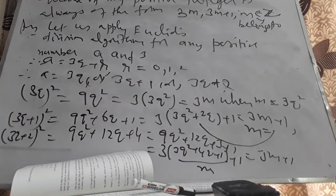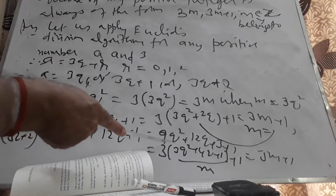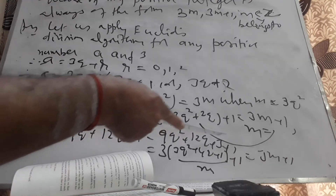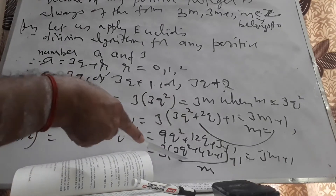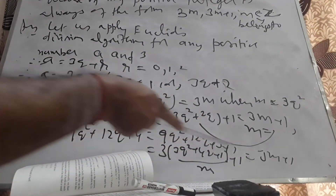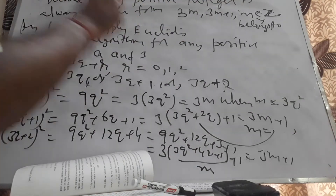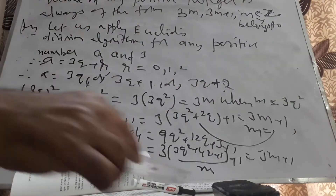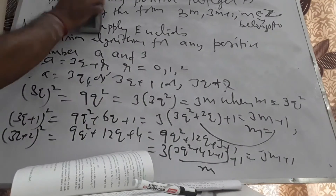(3Q+2)² is 9Q²+12Q+4, which equals 9Q²+12Q+3+1, which is 3(3Q²+4Q+1)+1, of the form 3m+1. Therefore the square of any positive integer will always be of the form 3m or 3m+1, where m is an integer — m belongs to Z means m is an integer.